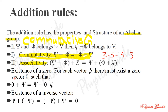The associative property means: for vectors psi, phi, and chi, adding the first two vectors and then adding the third gives the same result as adding the second and third first and then adding the first. Formally: (psi + phi) + chi = psi + (phi + chi). This is the associativity of the group addition rule property.